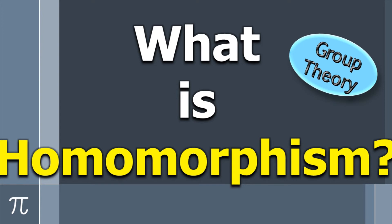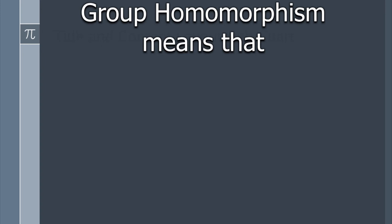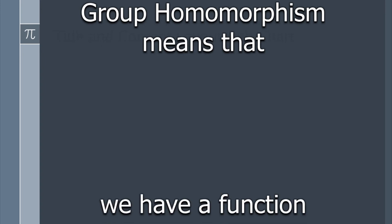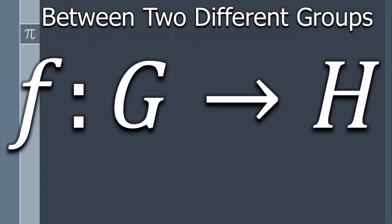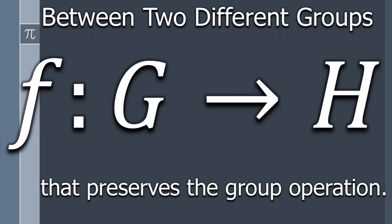Hello everyone. In this video we are going to learn what is a group homomorphism. A group homomorphism means that we have a function F between two different groups G and H, where F is defined from G to H, and the function F preserves the group operation.